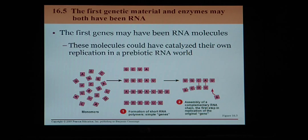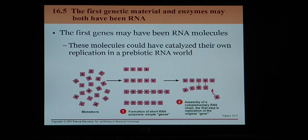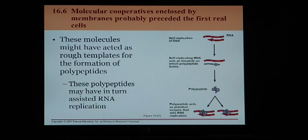The first genes may have been RNA, and these molecules could have catalyzed their own replication and been incorporated into a cell, giving us our very first cells. These molecules might also have acted as rough templates for the formation of polypeptides — remember, polypeptides are proteins.